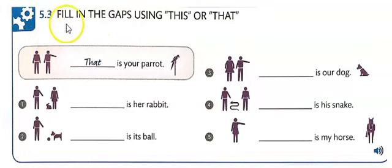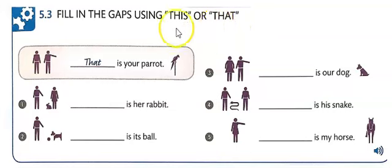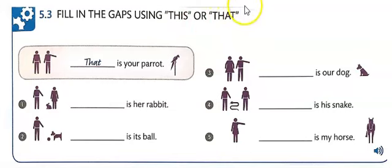In 5.3, fill in the gaps using 'this' or 'that.' Remember, you use 'this' when something is close to you, and you use 'that' when something is farther away from you.